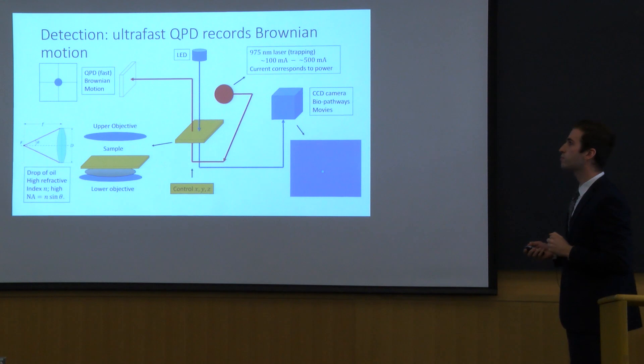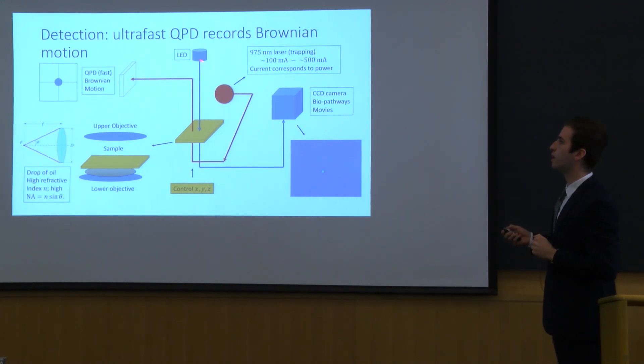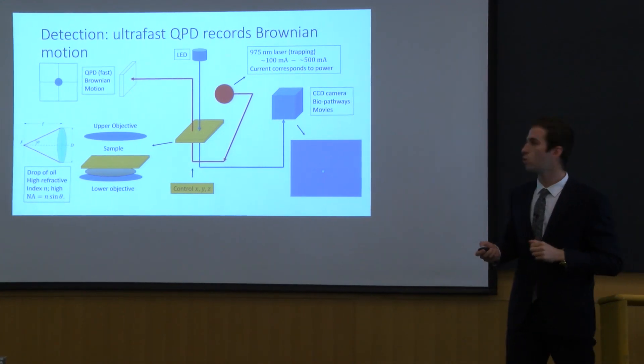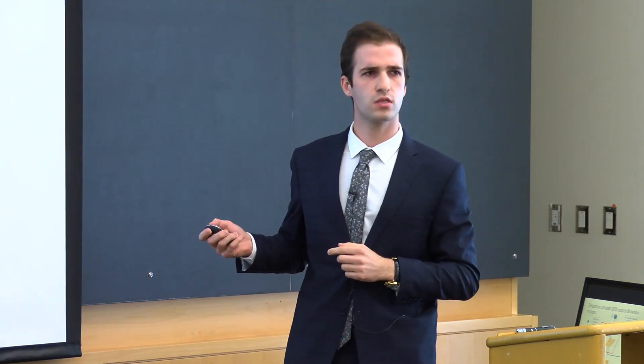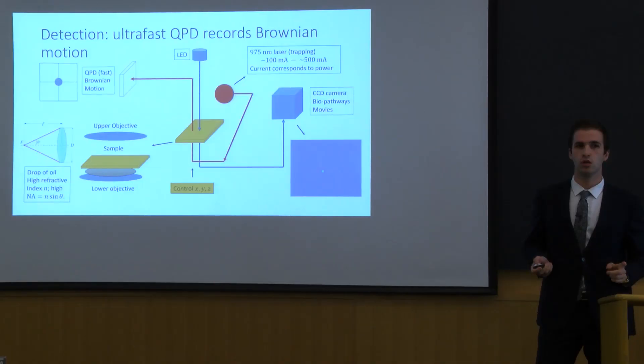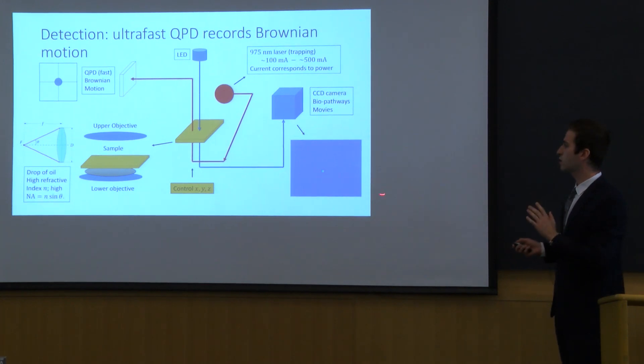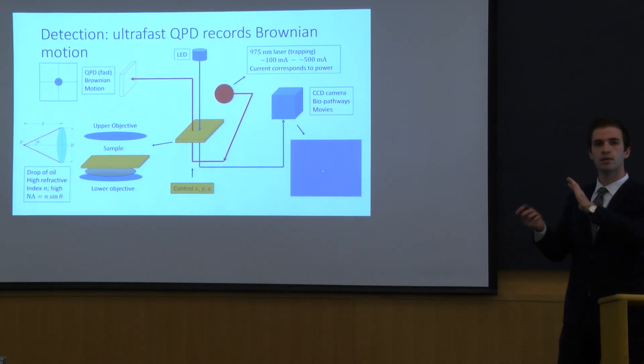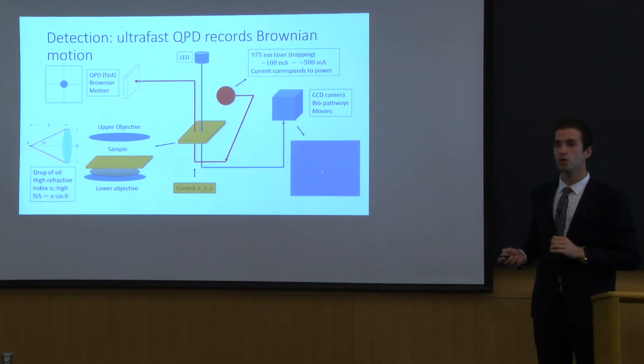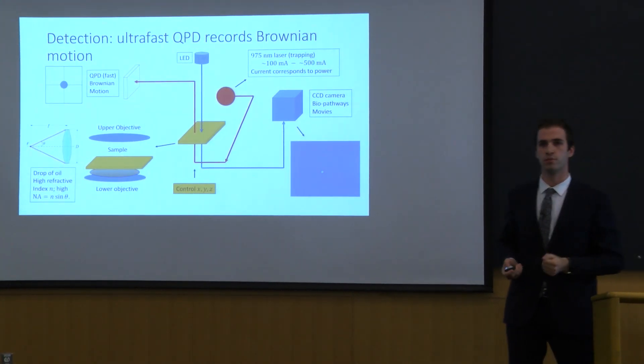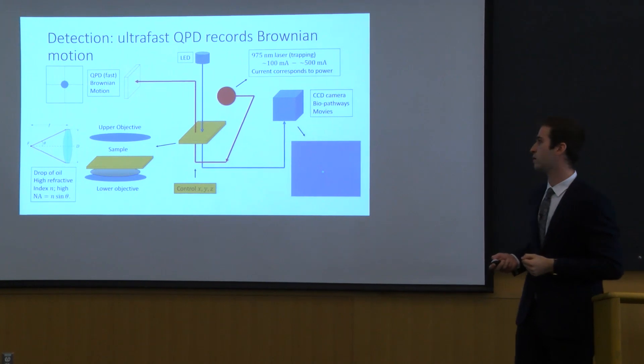The other interesting part of the apparatus is the LED light which illuminates the sample and then it brings it to the CCD camera and this is very important. So the CCD camera is very slow. It cannot measure Brownian motion. What it can do is it can tell us where are the beads. It can allow us to look at the water and find the beads we want to trap. So these two components in combination are crucial for the success of our research.